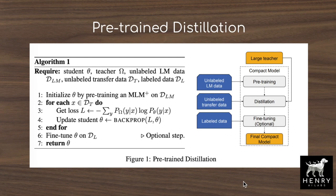But we don't want to use those large models directly for our tasks, because we might have a smaller GPU and want faster inference times when deploying. One way of compressing these models is to design a smaller model. BERT-large has something like 24 layers with a hidden dimension of 1024. You might construct a new model with only six transformer layers and a 512 hidden dimension, and have the smaller compact model predict the labels from the larger teacher model. This is known as knowledge distillation.